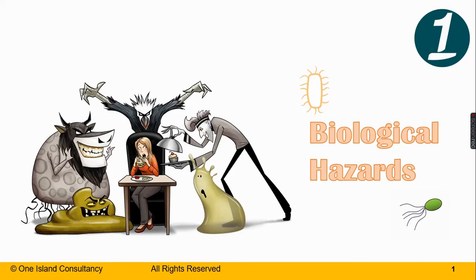Food safety hazard is classified into three major groups, which are the biological, chemical, and physical hazards. Today, we shall look into the biological hazard in food safety.